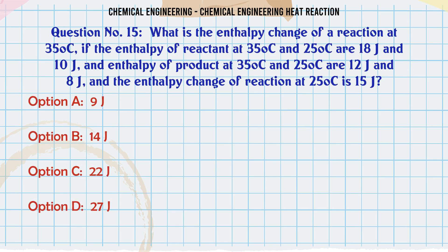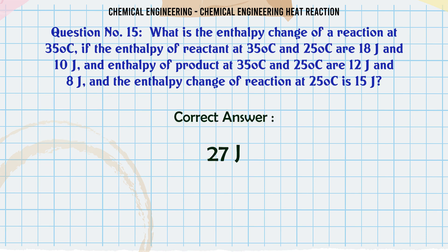What is the enthalpy of reaction for CO2 if the enthalpy of reactant at 35°C and 25°C are 18J and 10J, enthalpy of product at 35°C and 25°C are 12J and 8J, and the enthalpy change of reaction at 25°C is 15J? A: 9J, B: 14J, C: 22J, D: 27J. The correct answer is 27J.